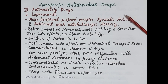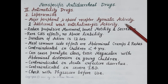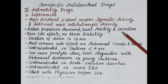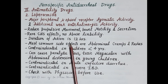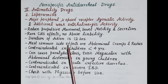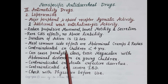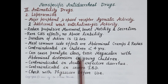Loperamide exhibits major peripheral mu opioid receptor agonistic activity and additional weak anticholinergic activity. By acting on mu opioid receptors, it reduces propulsive movements, decreases motility, prolongs gastrointestinal transit, and exhibits antidiarrheal effect. Its anticholinergic activity inhibits secretion. Loperamide crosses the blood-brain barrier in negligible amounts, so it rarely produces CNS effects and shows no abuse liability. Duration of action is 12 hours. Common side effects include abdominal cramps and rashes.